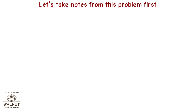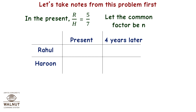Let's take notes from this problem. In the present, the ratio of Rahul to Haroon is 5 to 7. Let the common factor be n. Therefore Rahul's present age is 5n and Haroon's present age is 7n. Four years later, Rahul will be 5n plus 4 and Haroon will be 7n plus 4.